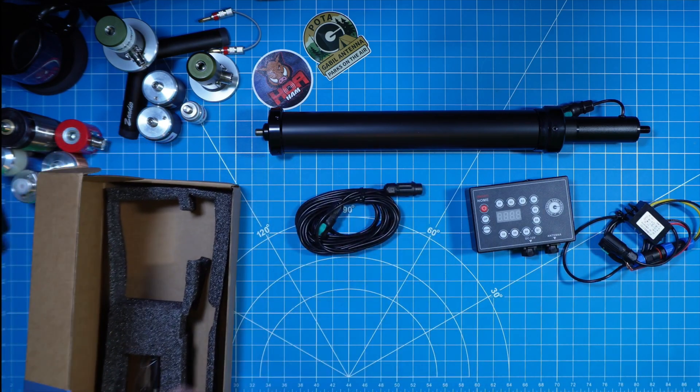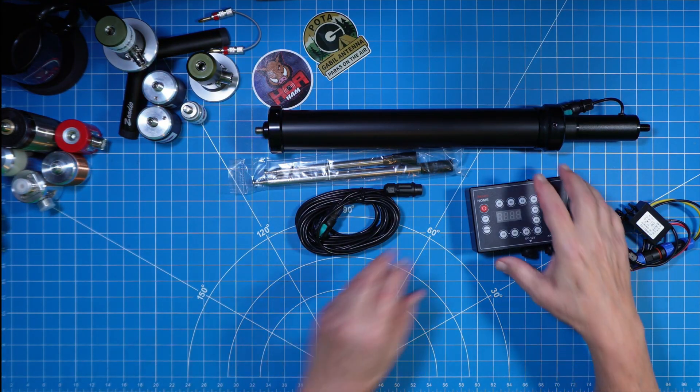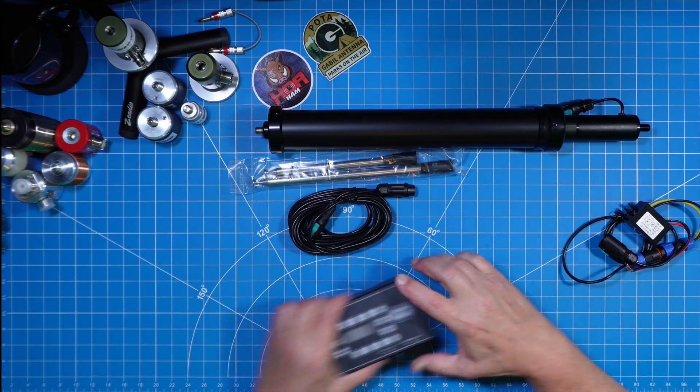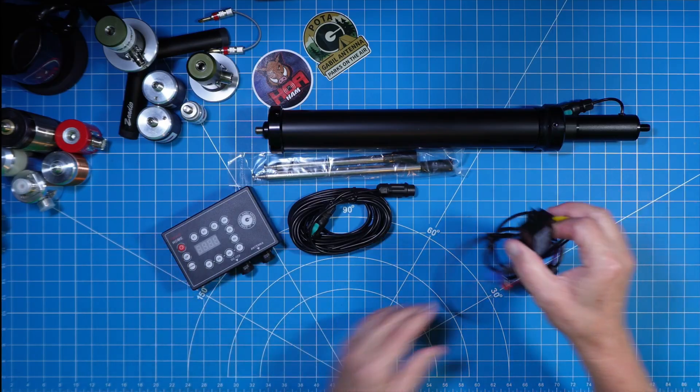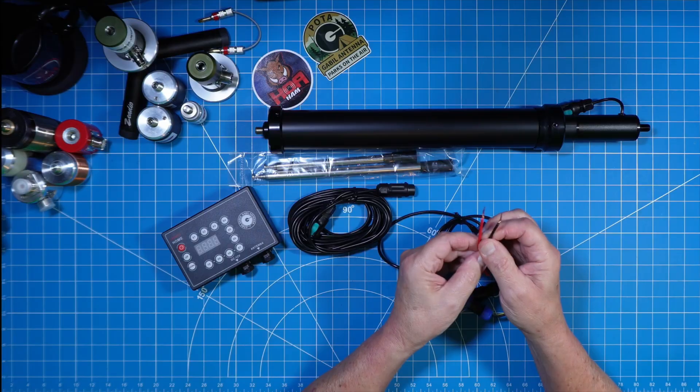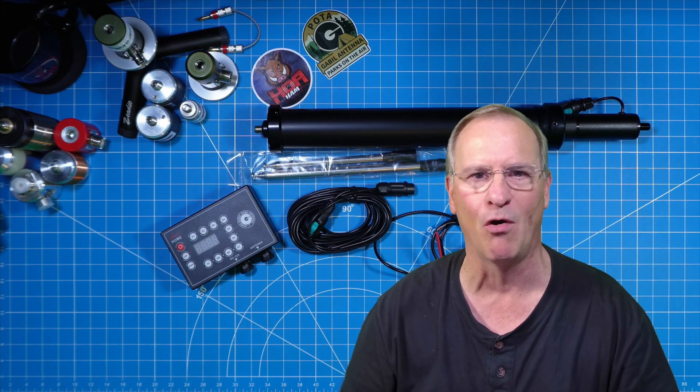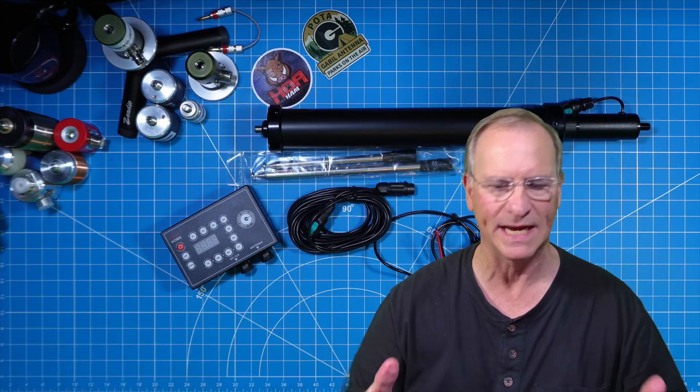You pull everything out of the box, maybe it's a brand new radio, and the first thing you want to do is plug things in and get them going, and what do you find but these bare wires? That means power poles. Now I've got to get my power pole crimper out and my power pole connectors. What a nuisance.